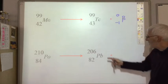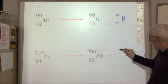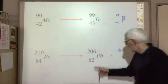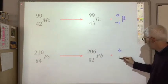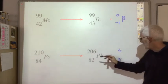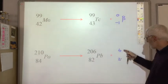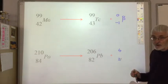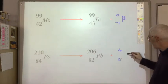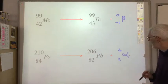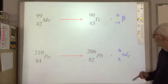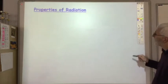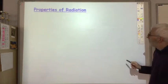For the bottom one: 206 plus 4 gives 210, and 82 plus 2 gives 84. So in this case it's going to be an alpha particle — we can write it as He or just as the alpha symbol.